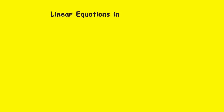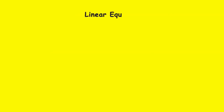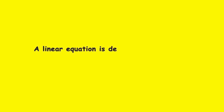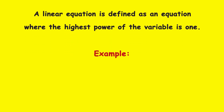Linear equations in two variables. Objective: to understand linear equations in two variables. First, let's understand linear equations. A linear equation is defined as an equation where the highest power of the variable is 1. For example, 2x plus 3 is equal to 8 is a linear equation, because the highest power of x here is 1.